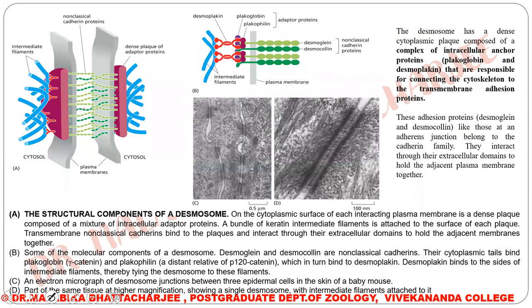Next we move on to the second category of junction: the adherence junction. Under the anchoring junctions, there is an intermediate filament attachment site, and under that we are studying the desmosome. Let us look into the picture of the desmosome. This is one cell and this is the other cell.